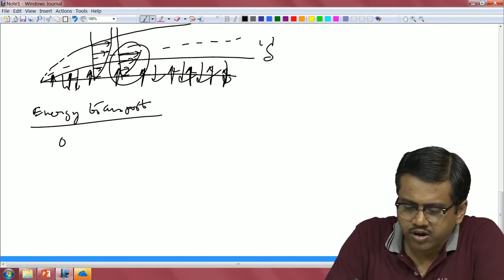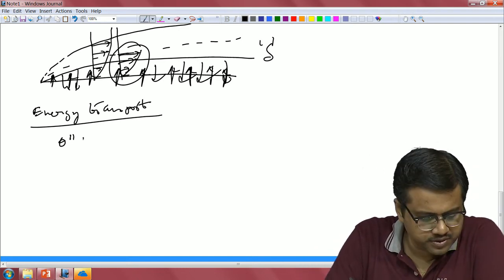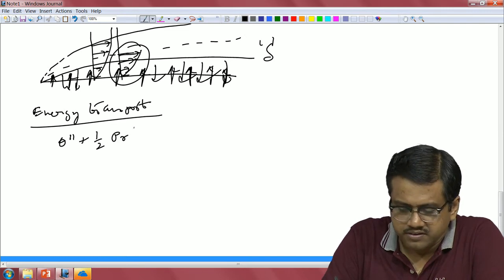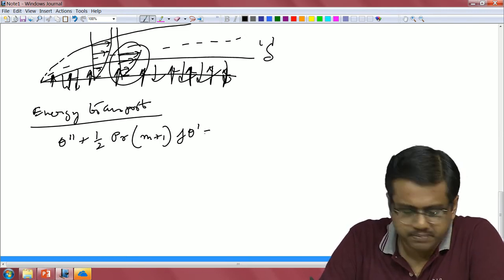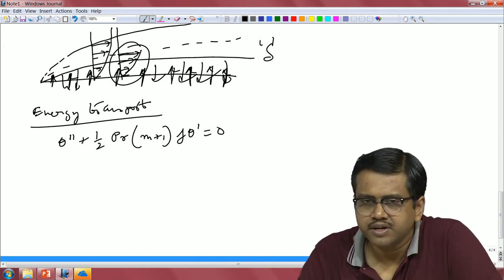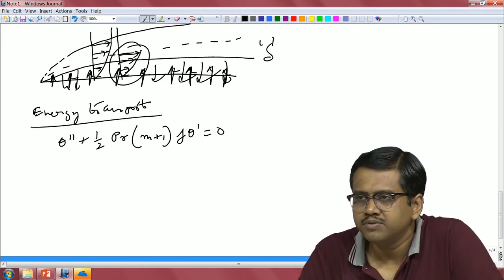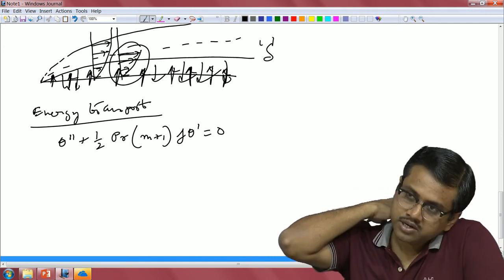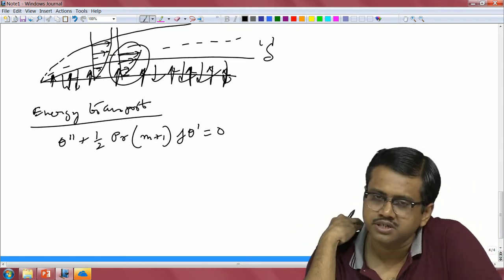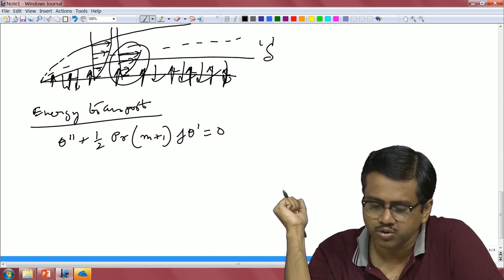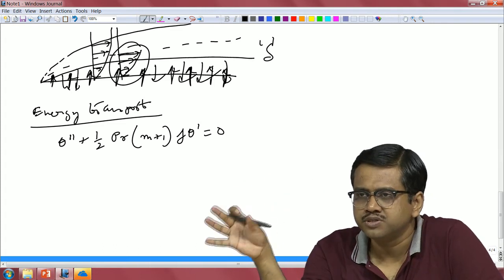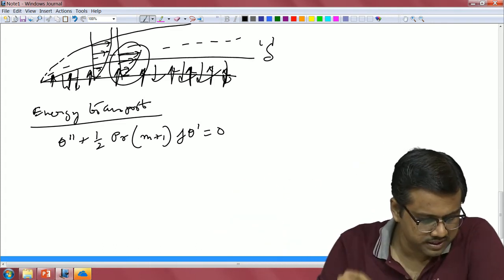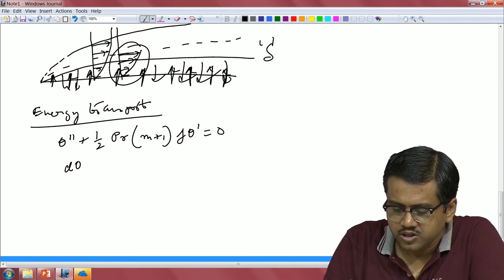For the energy transport equation, I am just adding a term (m+1) in this particular case. We will come to the significance of m+1 when we do the Falkner-Skan class of solutions. So let us assume this is the energy transport equation and proceed with the analysis.